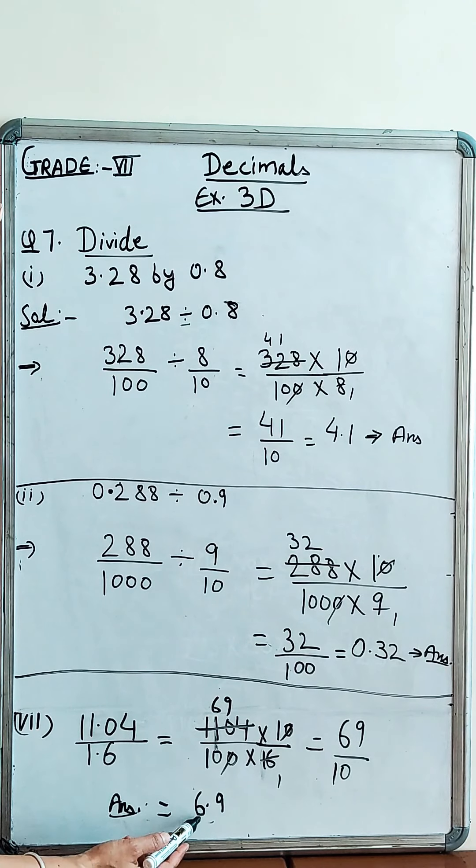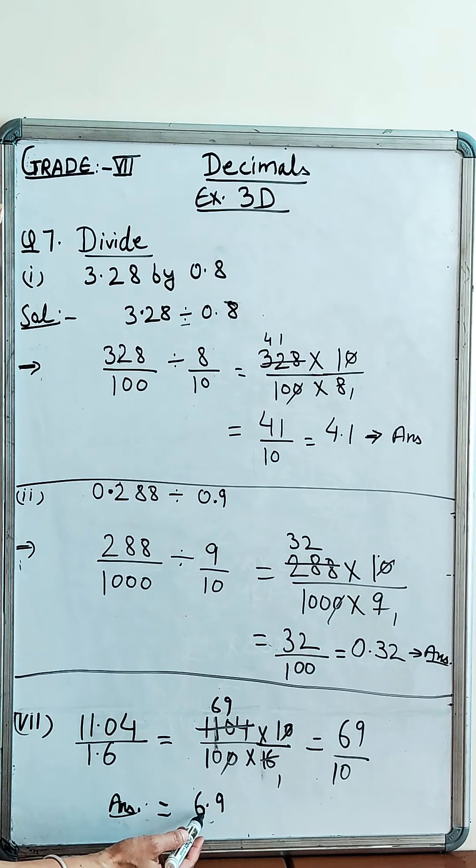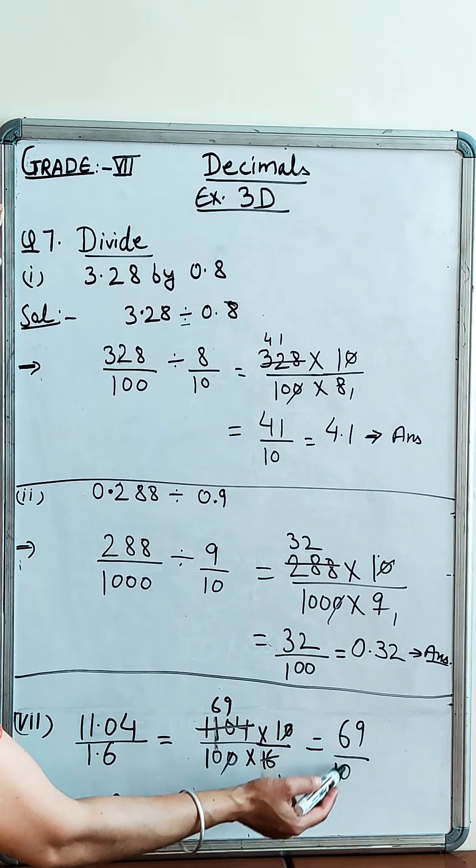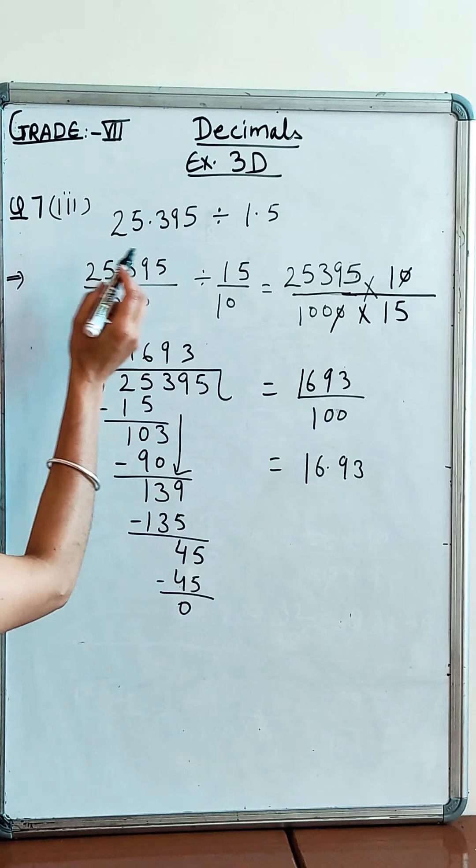69 over 10 because the 10s cancel. When we write this in decimal form, 69 over 10 means 6.9. The answer is 6.9.